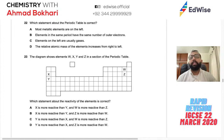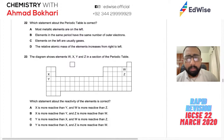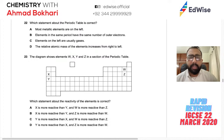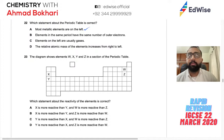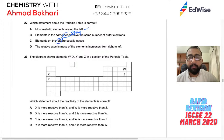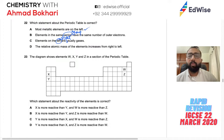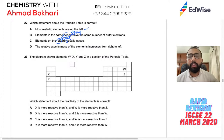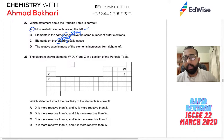Question 23: Which statement about the periodic table is correct? Most metallic elements are on the left — true. Elements in the same period have the same number of shells (not the same number of outer electrons — that's for groups). Elements on the left are usually gases — false, that's the right side. Relative atomic mass increases from right to left — false, it increases left to right generally. Answer: A, most metallic elements are on the left.